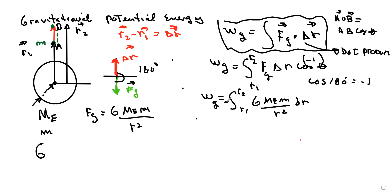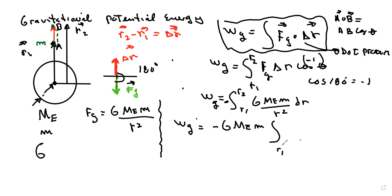Let's pull all the constants out of the integration. The work done by the gravitational force equals minus G times the mass of the Earth times the mass of the little particle, times the integral from r1 to r2 of r⁻² dr.